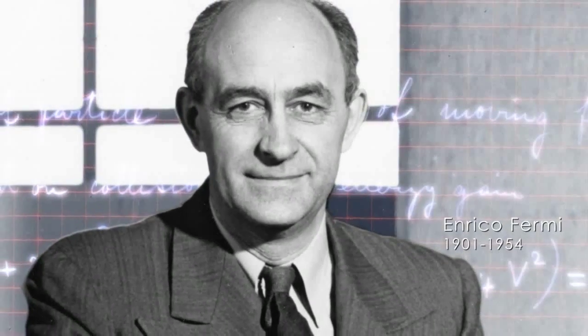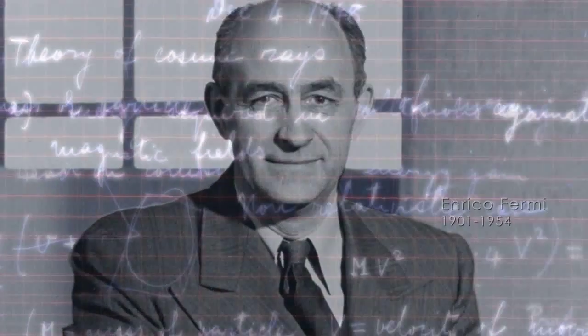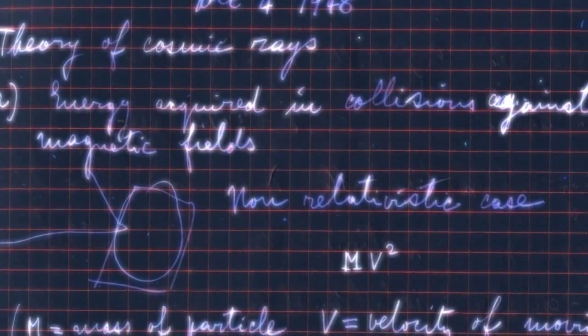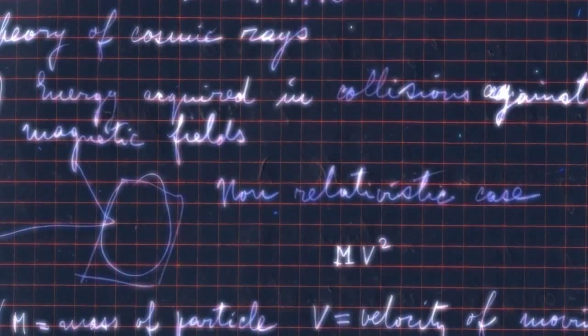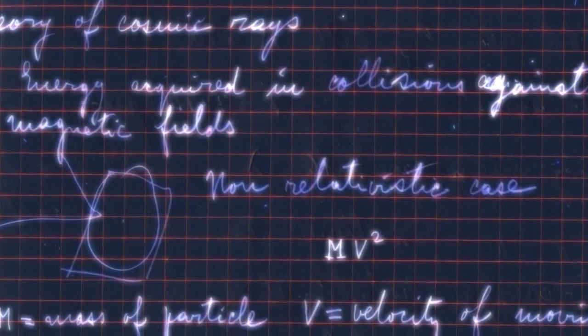In 1949, physicist Enrico Fermi worked out how what he called magnetized clouds could accelerate cosmic rays. Later studies showed that a variant of his method, called Fermi acceleration, worked especially well in supernova remnants.